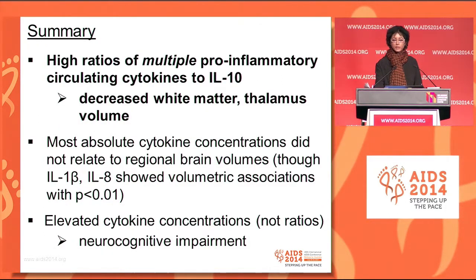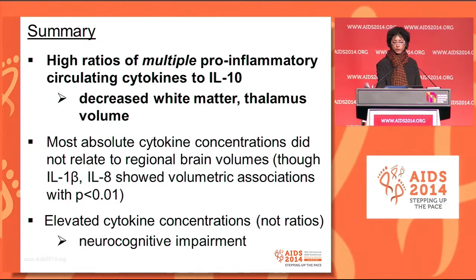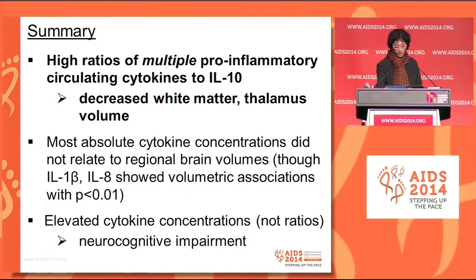To summarize: for multiple pro-inflammatory circulating cytokines, we found that high ratios over IL-10 were independently associated with decreased white matter and thalamus volumes. In contrast, most absolute cytokine concentrations were not related to regional brain volumes, even though IL-1 beta and IL-8 did show volumetric associations with p less than .01. Neurocognitive impairment correlated with elevated cytokine concentrations but not with ratios.